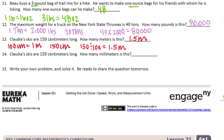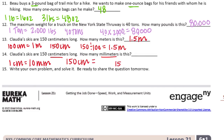Number 14: Claudia's skis are 150 centimeters long. How many millimeters is this? We're going from centimeters to millimeters. There are 10 millimeters in 1 centimeter. So if I have 150 centimeters, I can multiply that by 10 and I'll get 1,500 millimeters.